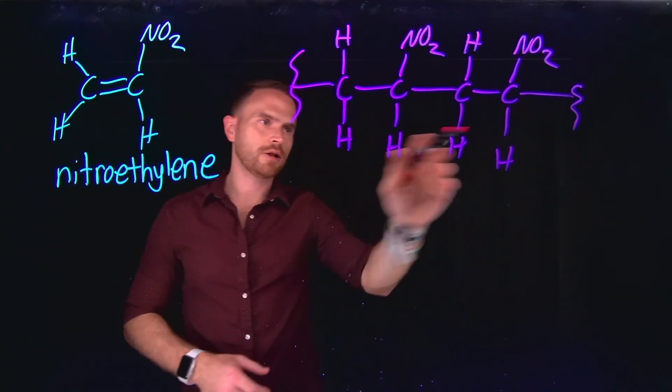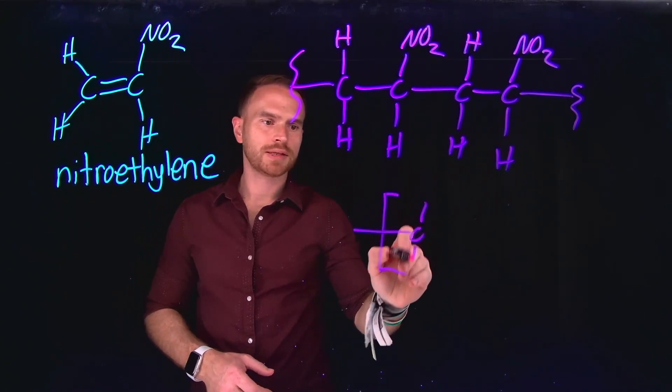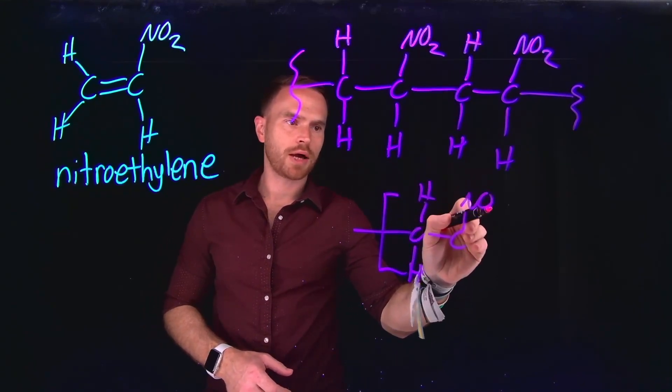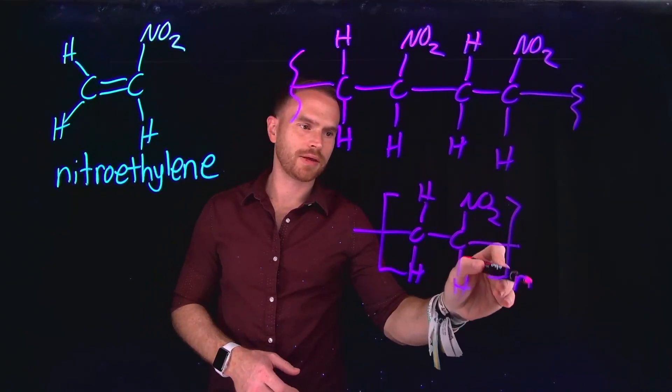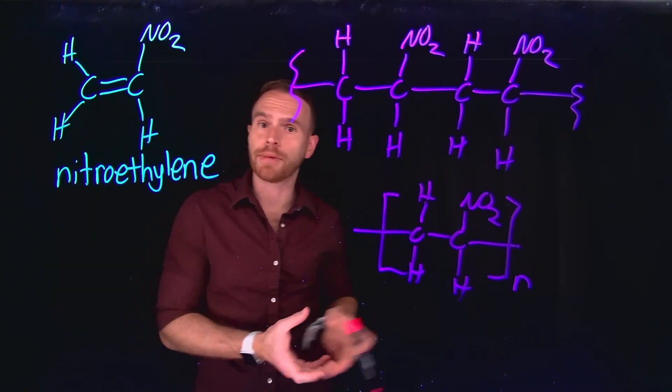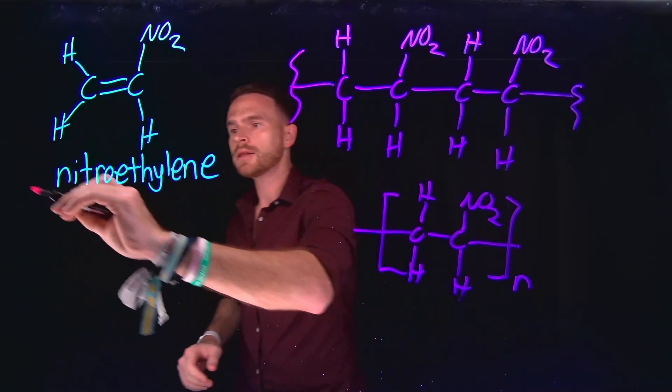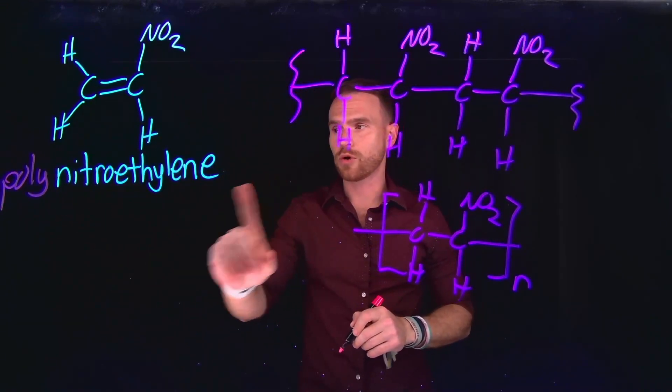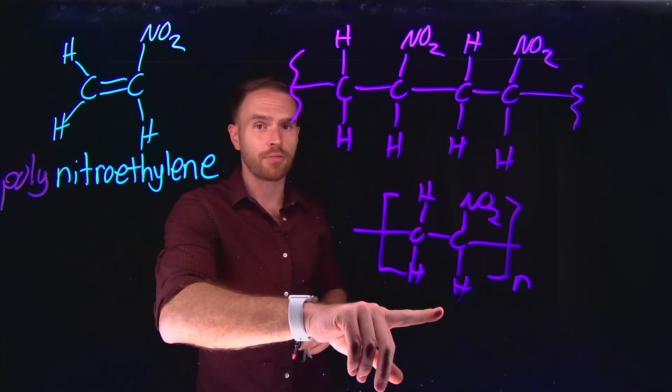So we can draw the polymer in this orientation, or we can use the bracket notation to indicate that they are repeating several times over by just writing the different brackets surrounding the individual monomeric unit and writing the letter N to indicate some number of repeating units. Again, this is called poly nitro ethylene because nitro ethylene is just one word, and all you need to do is write the word poly in front of it to get the name of the polymer.